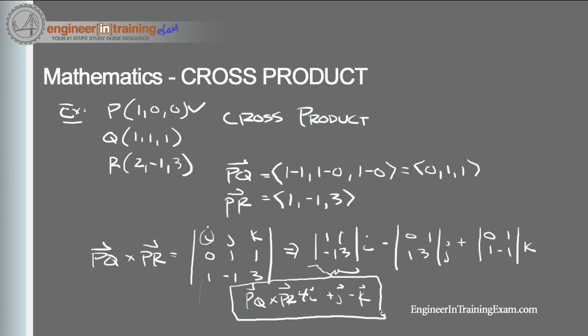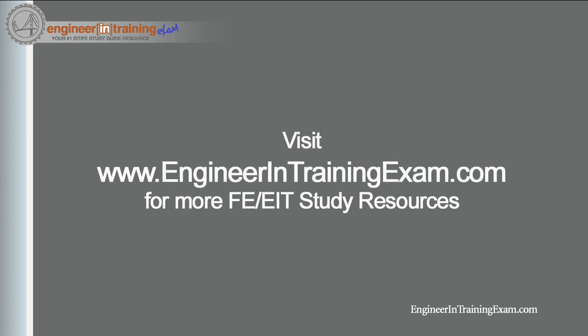That's all there is to the cross product. The difference between the dot product and the cross product is that the dot product is a single number — a scalar — and the cross product gives us a new vector. If you have any questions, hop on over to engineerintrainingexam.com, shoot me some feedback, your suggestions, or general questions. I look forward to hearing from you and talking with you soon. Take care.